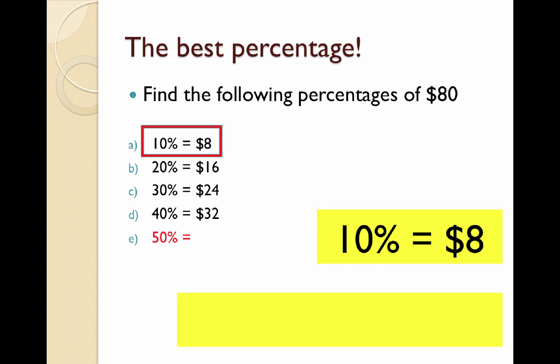50% follows the same pattern: it's 5 lots of 10%, or 5 lots of $8, which gives me $40. Remember that 50% is also half, so I could have just halved the $80 to get $40. But 10% is really useful because it works for any multiple of 10.